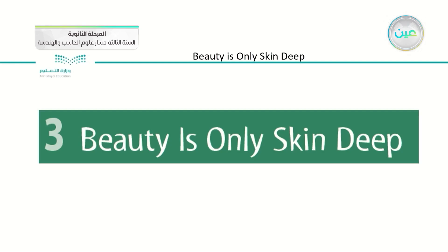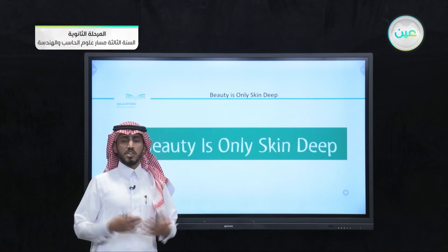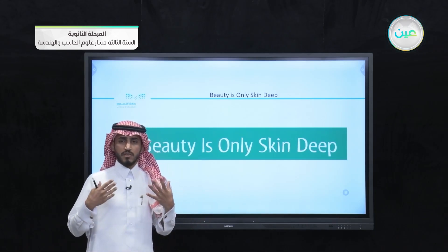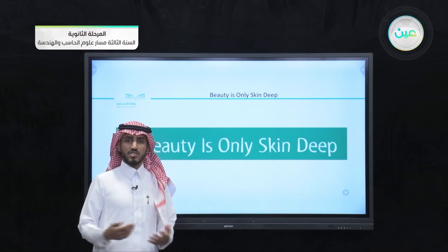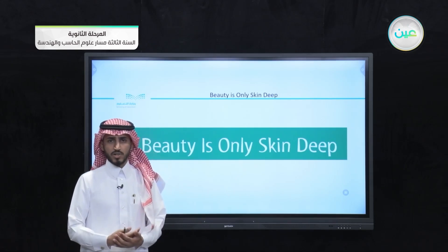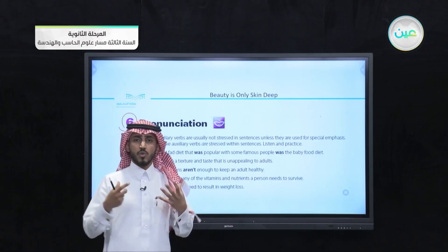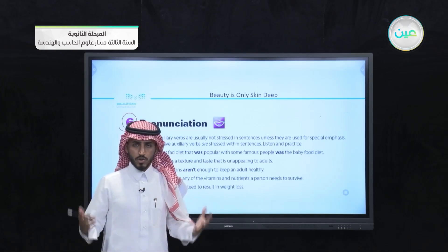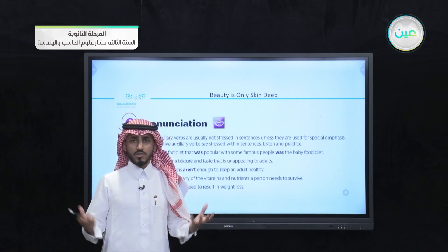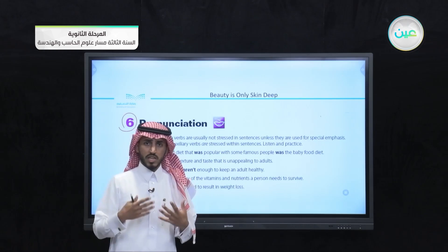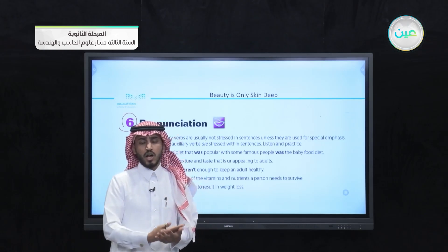In the previous lesson, we started with the topic of the unit: beauty is only skin deep. We said this expression means that beauty is only an artificial thing and it doesn't reflect the inner beauty and the personal traits. Then after that, we started with the first skill we talked about, which is pronunciation. Pronunciation means the way we say a word — the correct way of saying a word — and pronunciation lessons help us understand what we hear and utter the words properly.